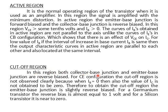In the Cut-off Region, both the Collector-Base Junction and Emitter-Base Junction are reverse biased, similar to what we saw in Common Base configuration. For CE configuration, the cut-off region is not observed clearly. For a Germanium transistor, the reverse bias is almost equal to 1V, whereas for a Silicon transistor it is approximately 0V.